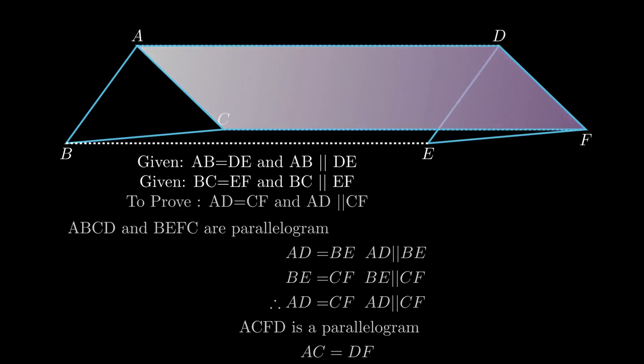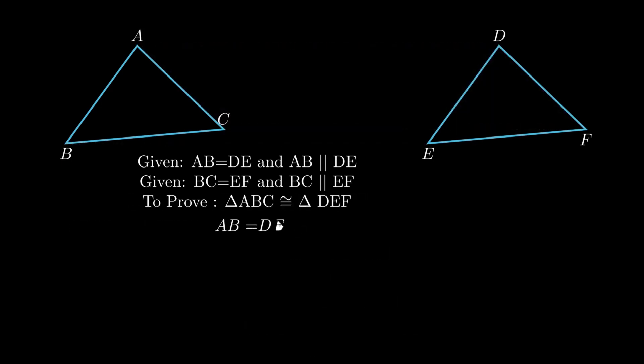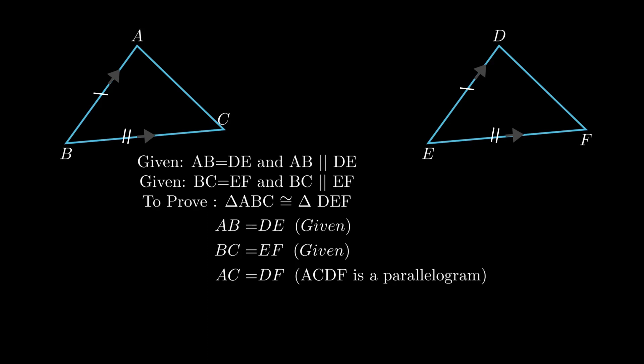Since AD is equal and parallel to CF, ACFD is a parallelogram. As opposite sides of a parallelogram are equal, AC = DF. To prove triangle ABC congruent to triangle DEF: AB = DE, BC = EF, and since ACFD is a parallelogram, AC = DF. By the side-side-side criterion, triangle ABC is congruent to triangle DEF.